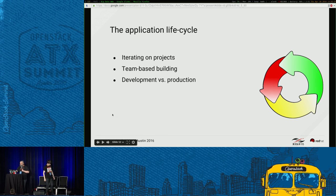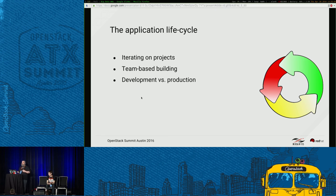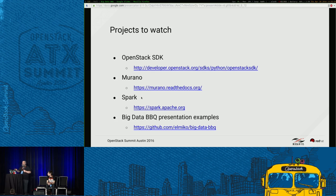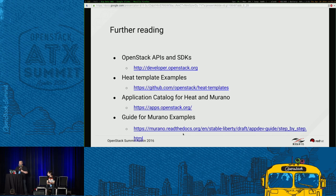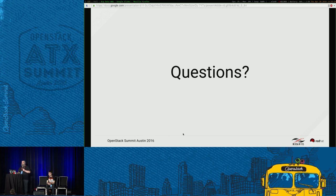Thanks, Nikita. We're a couple of minutes over, so just quickly going back — you want to think about the application life cycle: how are you going to deploy these applications, how will your teams iterate them, how will you empower collaboration. A couple quick links: watch the OpenStack SDK project, Murano, definitely check out Spark, and there are some example code pieces in my repository at the Big Data Barbecue on GitHub, where I'll also put a PDF version of this presentation. For more reading, check the API site, the app catalog, and the Murano examples.